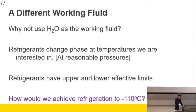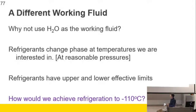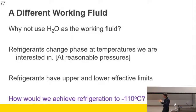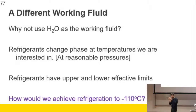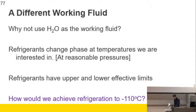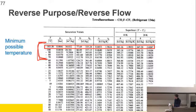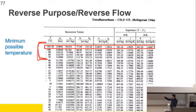You can't get water below 0.01 degrees C and still have it as a liquid. So we choose refrigerants and customize them - there are lots of them. You choose the one that will deal with the pressures and temperatures you're interested in, as they have lower and upper effective limits. R134a goes down to negative 103, although you'd more typically use it down to maybe negative 40 or negative 30.